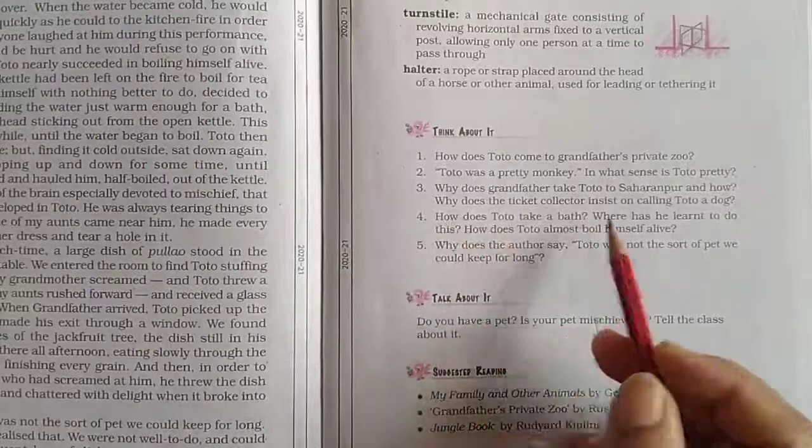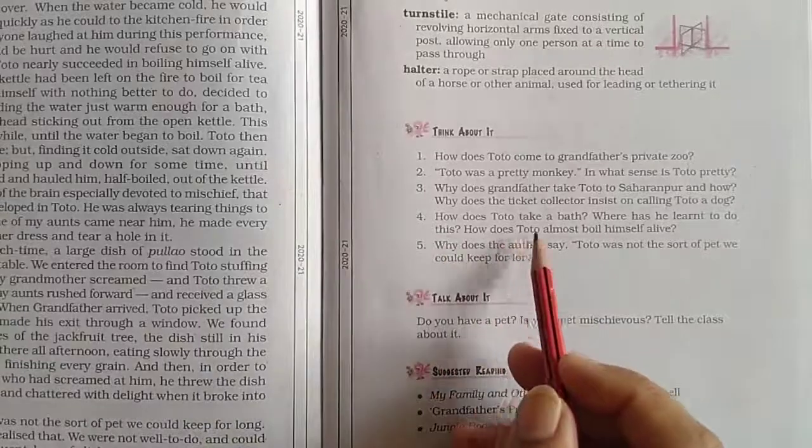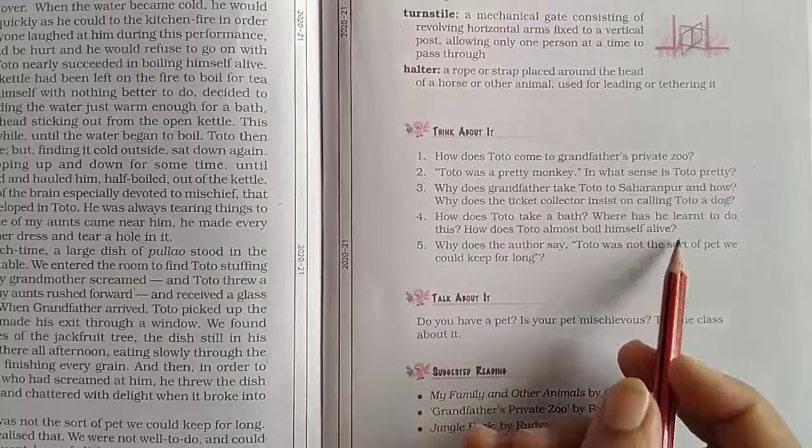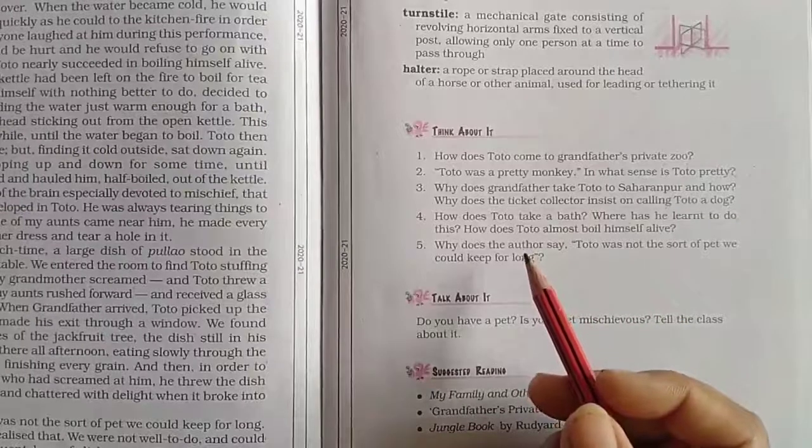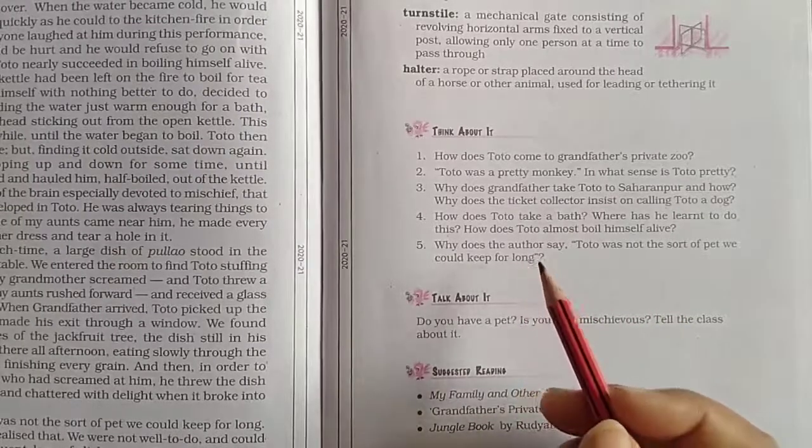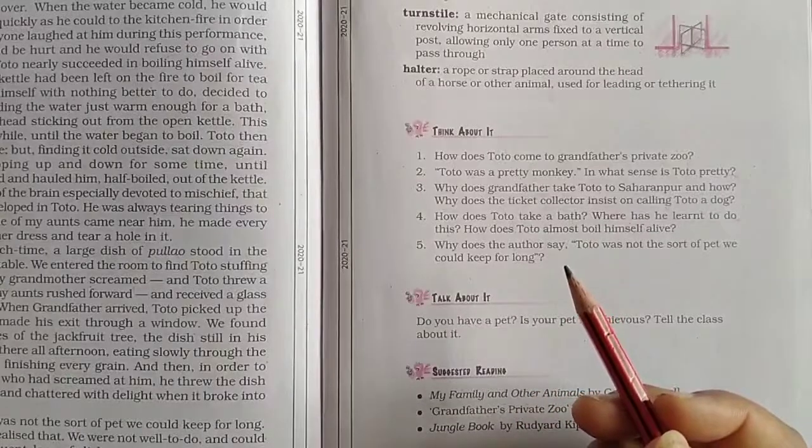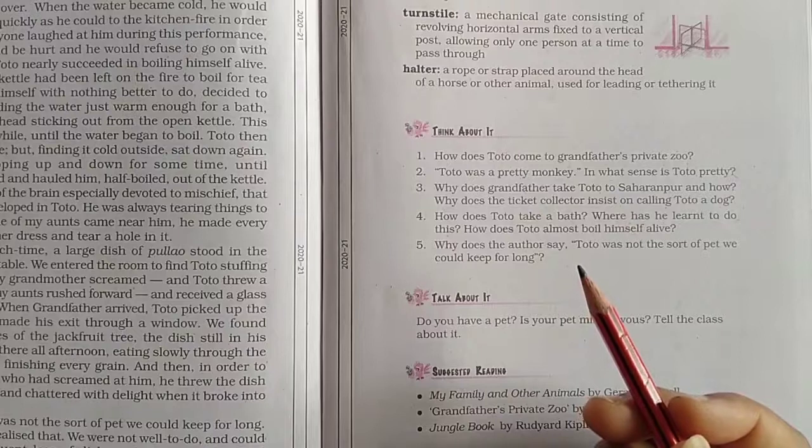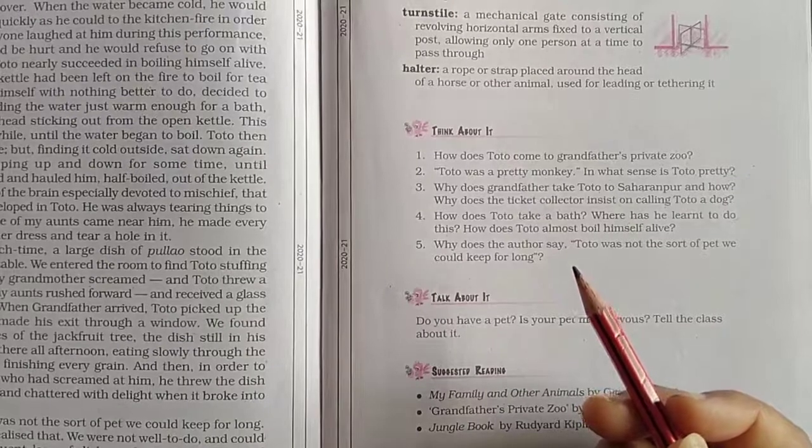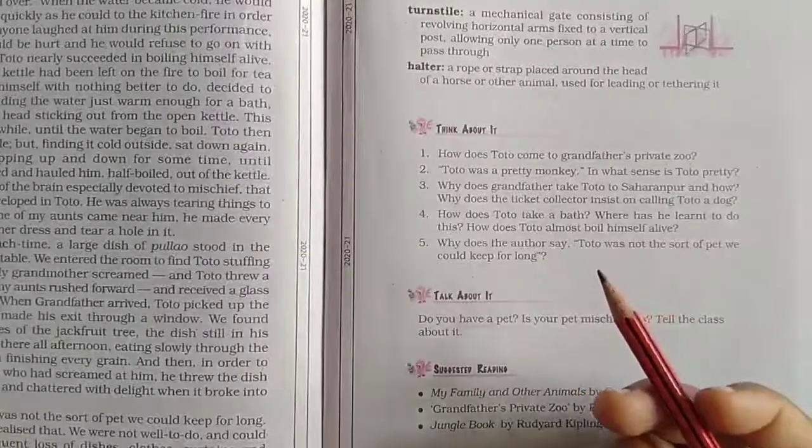How does Toto take a bath? Where has he learned to do this? How does Toto almost boil himself alive? During winter evenings, grandmother gave Toto warm water for his bath. At first, Toto would check with his hand if the water was hot enough. When he found its temperature right, he would put one foot in first, and then the other foot, until he was in water up to his neck.